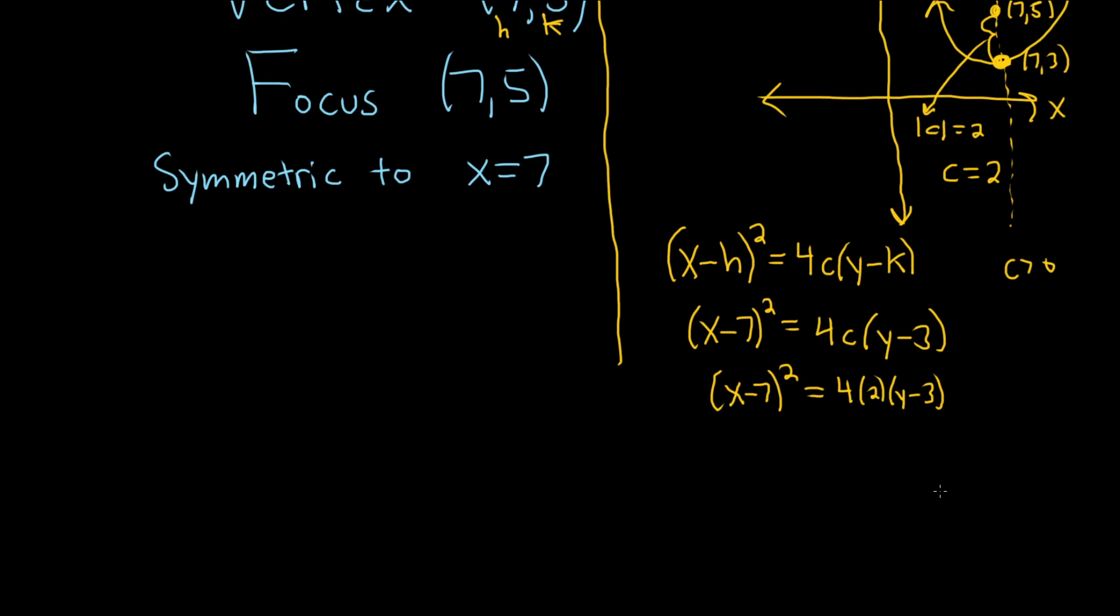Good stuff. So this will be (x minus 7) squared, and 4 times 2 is 8, times (y minus 3). And that will be the equation of the parabola.